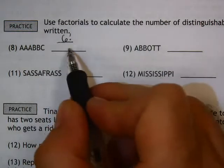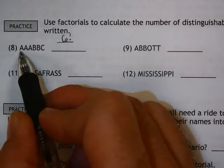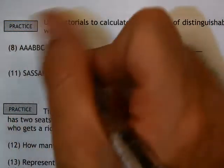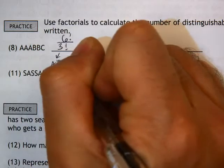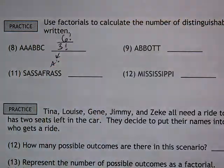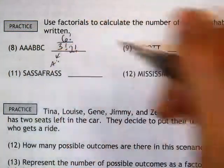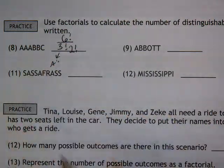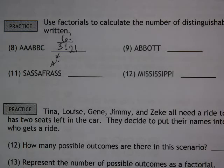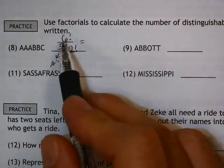On the bottom, you just have to represent which numbers are repeating. Since the A is repeating, there's three of those A's, so I'm going to start with three factorial for the A's. Then the B's repeat — there's two of those, so that will be two factorial. The C, there's only one C, so we don't even have to represent that. It's just the ones that repeat that we need to show. That's how you set up your first fraction.